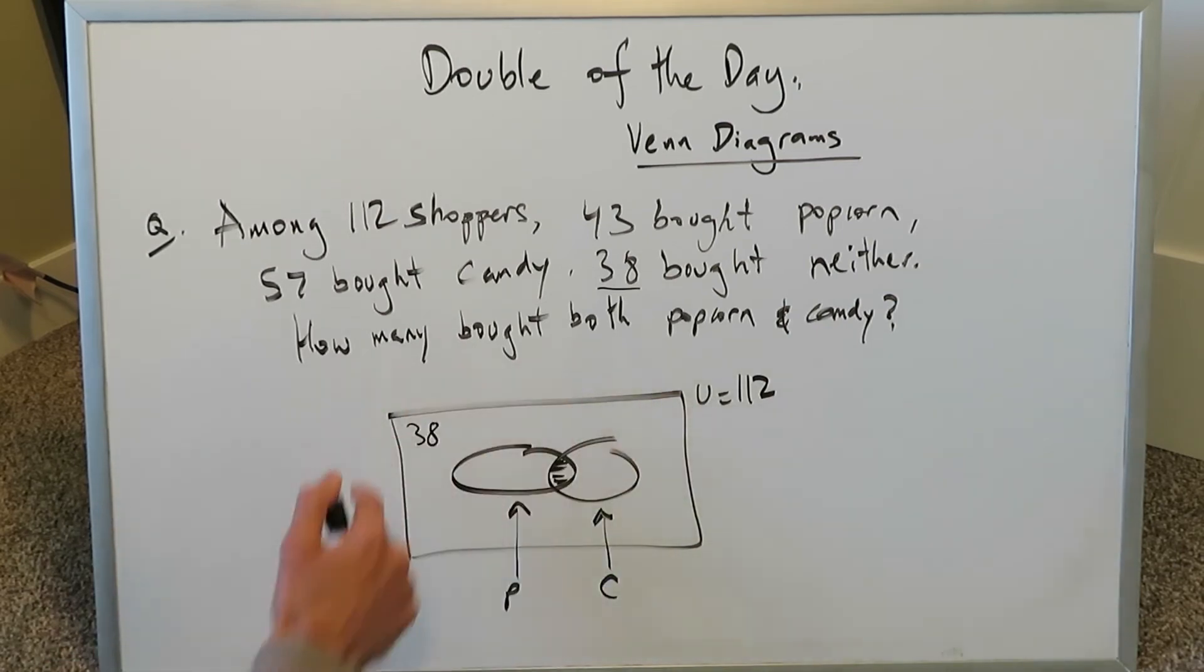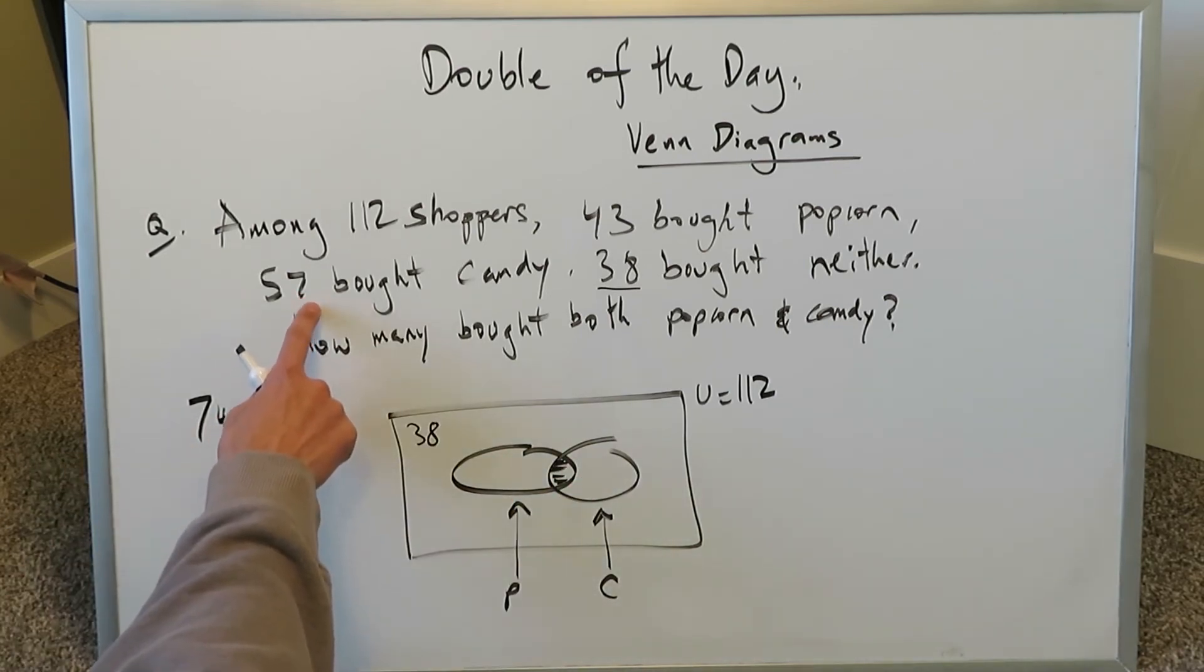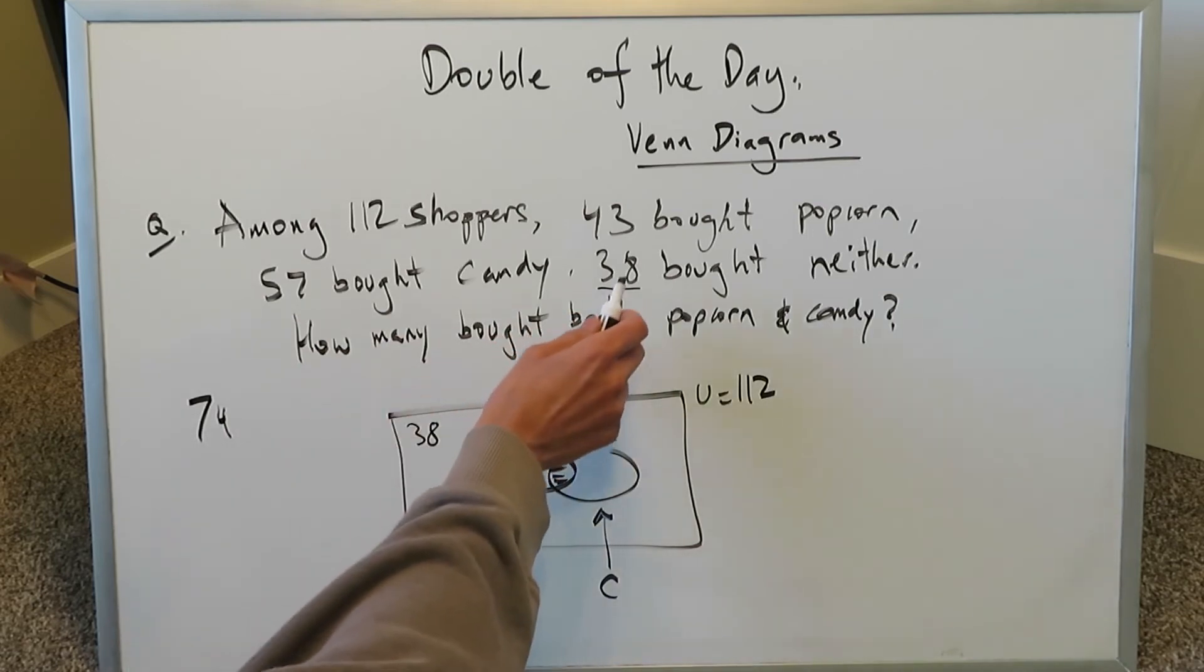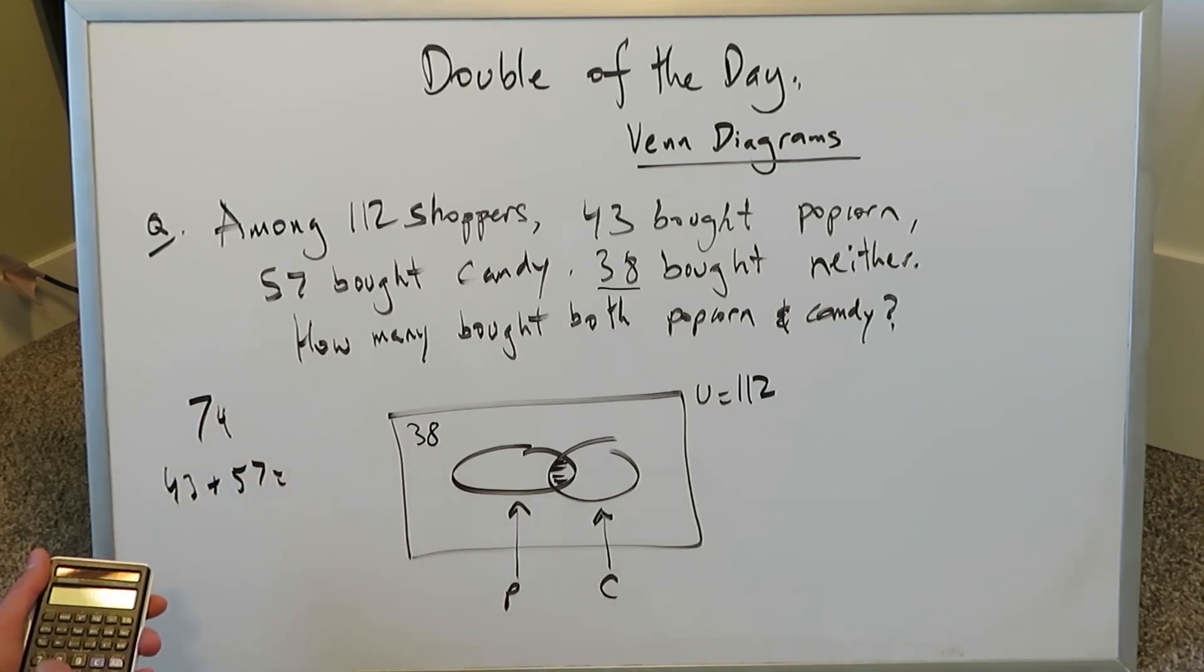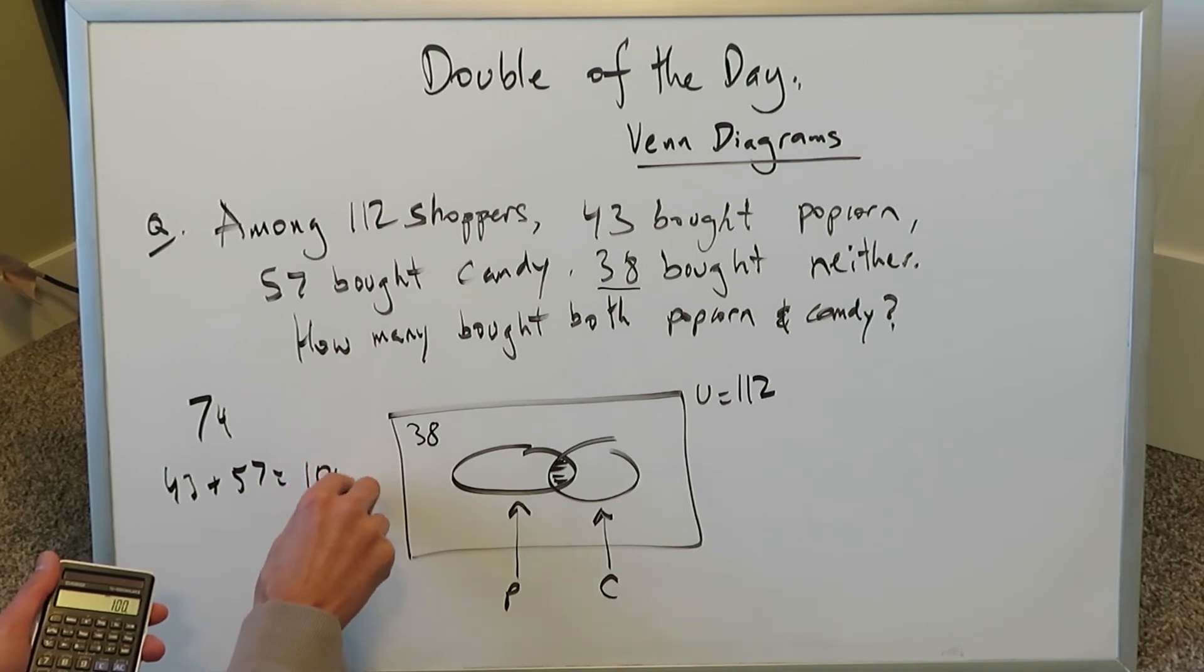If you do 112 minus 38, that tells you the number of people who bought something, whether it was popcorn or candy. These are 74 people who bought something. But we're seeing that 57 bought candy and 43 bought popcorn. If you do 43 plus 57, that gives you 100. What does that tell you?